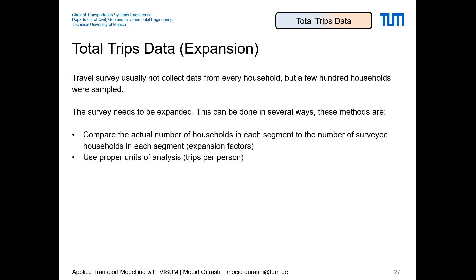Now that we understand what a trip is, we look at how survey data is expanded to represent total network trips. A travel survey typically collects data from only a few hundred households. These surveys need to be expanded to the full population using two methods: comparing survey demographic distributions against actual population data and applying appropriate expansion factors.